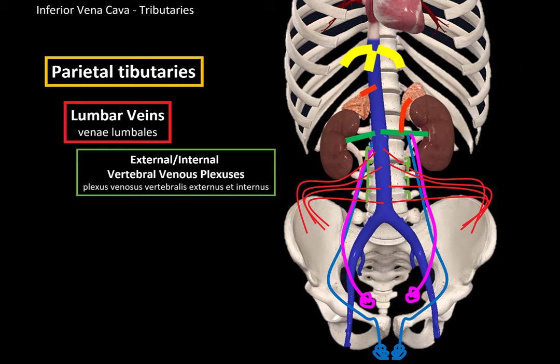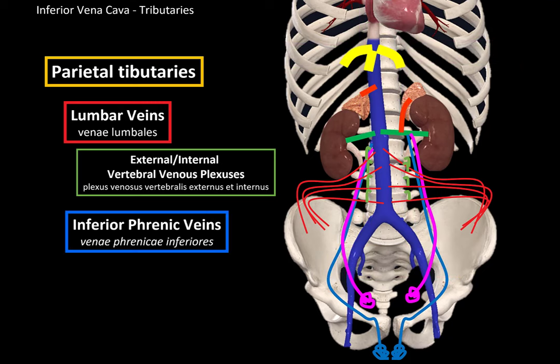Lastly, we have the inferior phrenic veins, which are related to the diaphragm and drain the diaphragm from the inferior side.